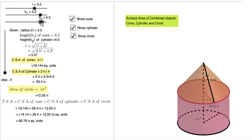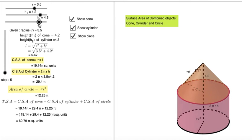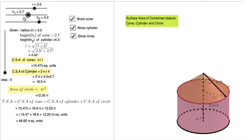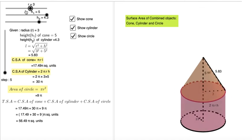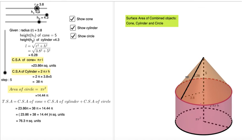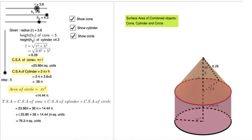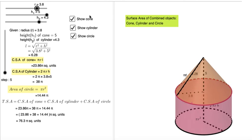As you see, you can decrease or increase the height of the cylinder, decrease or increase the height of the cone, and decrease or increase the radius of the object. So play around this model and understand how to find surface area of the combined objects.